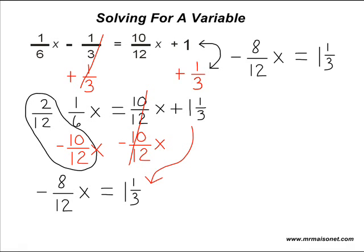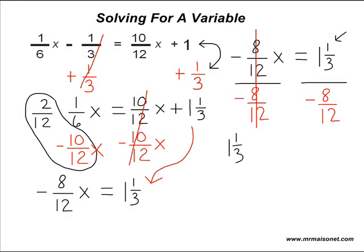To isolate the x variable, we do the opposite of multiplying by negative 8 twelfths, which is to divide by negative 8 twelfths. That cancels the negative 8 twelfths on the left-hand side. On the right-hand side, we take positive 1 and 1 third and divide by negative 8 twelfths. We rename 1 and 1 third as an improper fraction, which is 4 thirds, and then multiply by the reciprocal of negative 8 twelfths, which is negative 12 eighths.